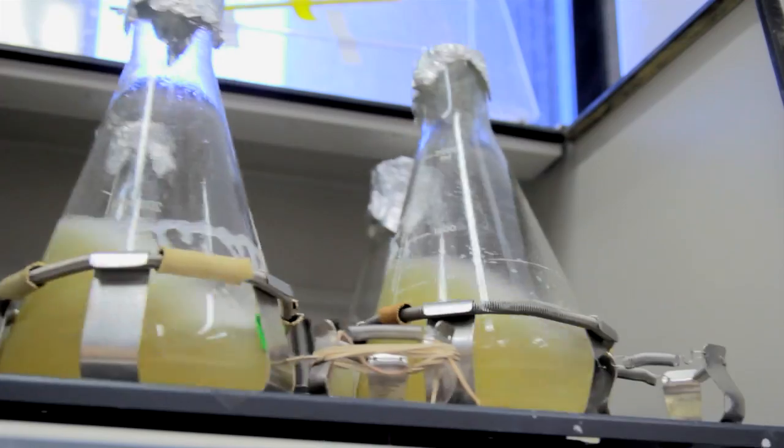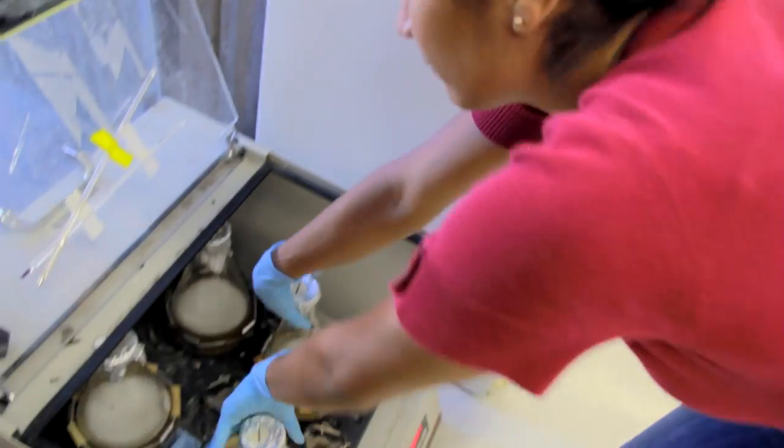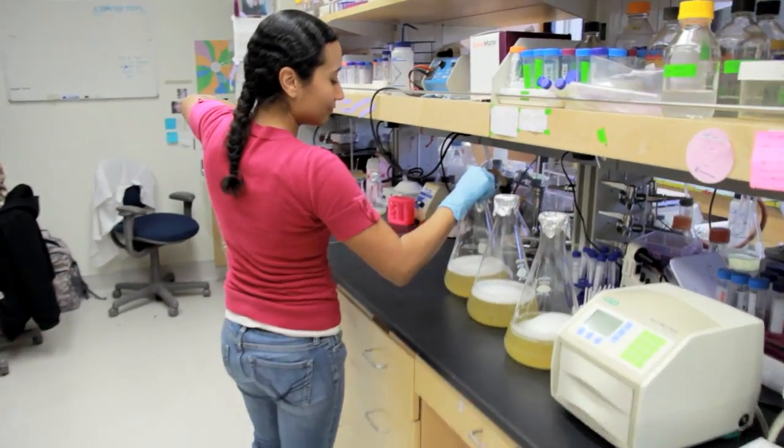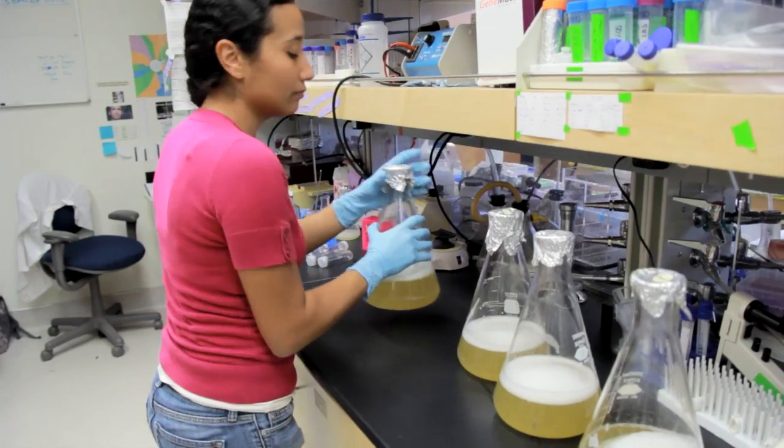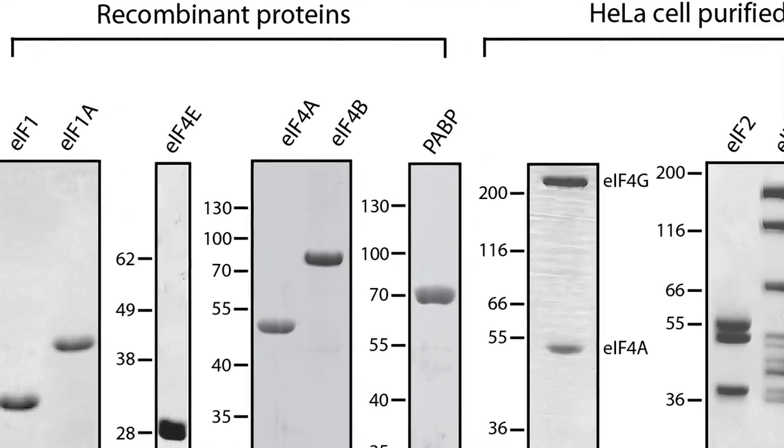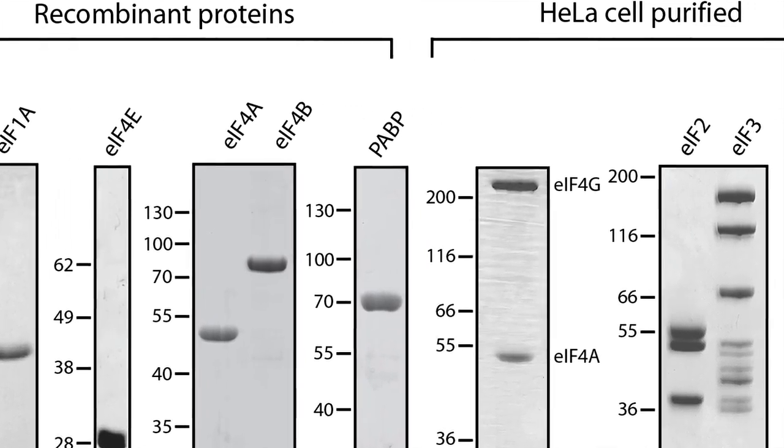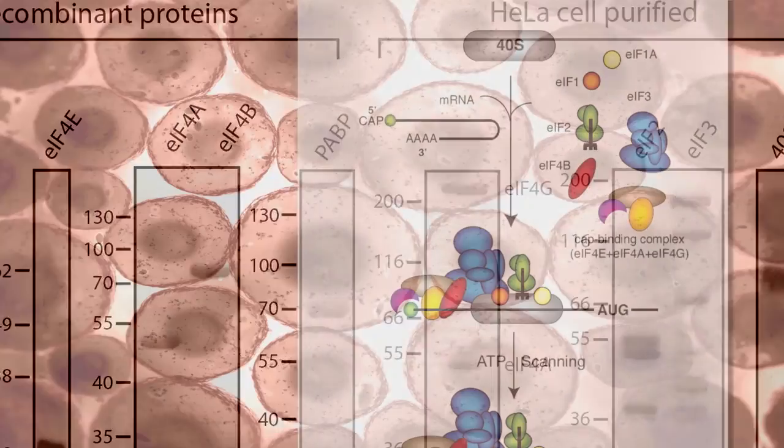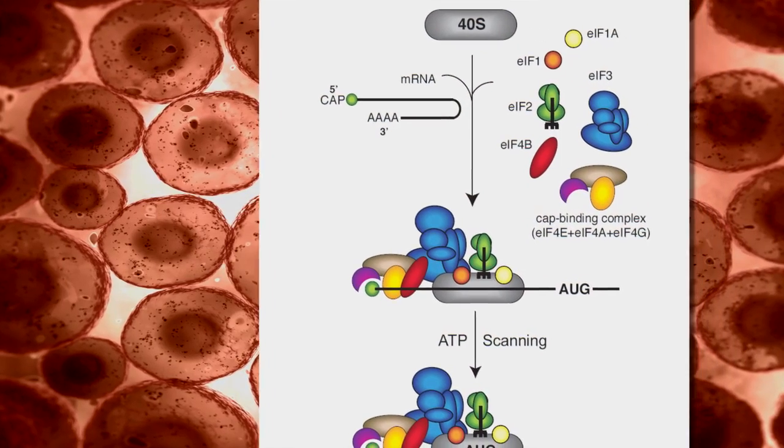So a lot of the pieces of the puzzle are already in place, but now it's really putting them together to understand how they fit together and how they function as a machine. So my lab takes a biochemistry approach to many of the problems we're trying to answer, and so we often will reconstitute a system using purified components so that we can study individual components and how they function in the pathway.